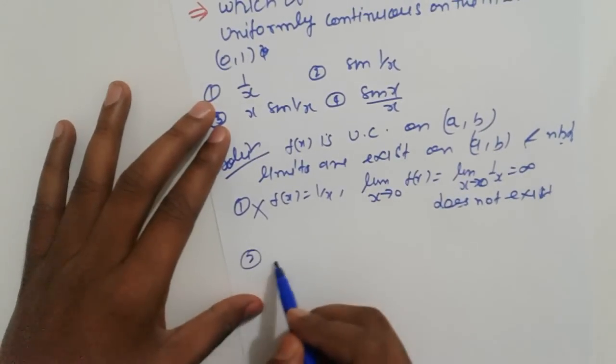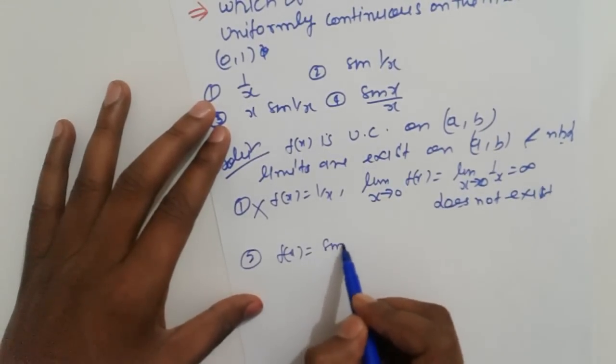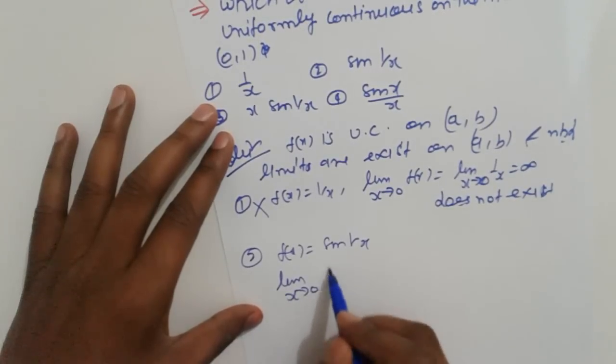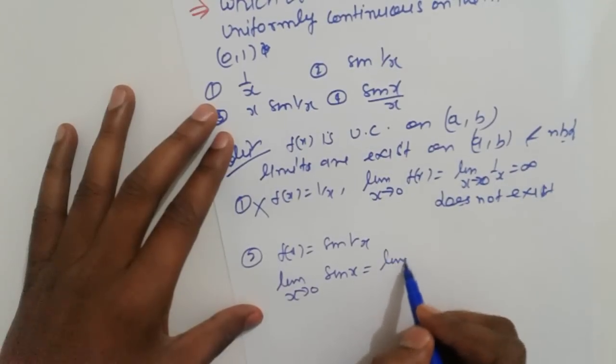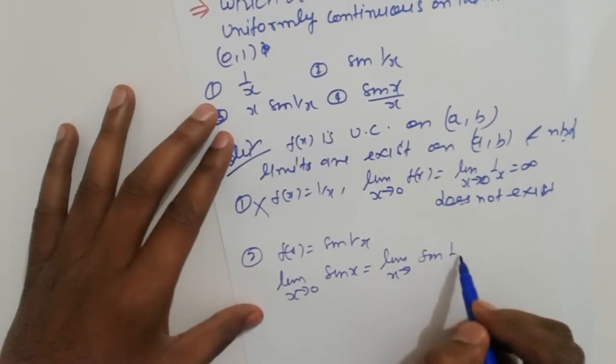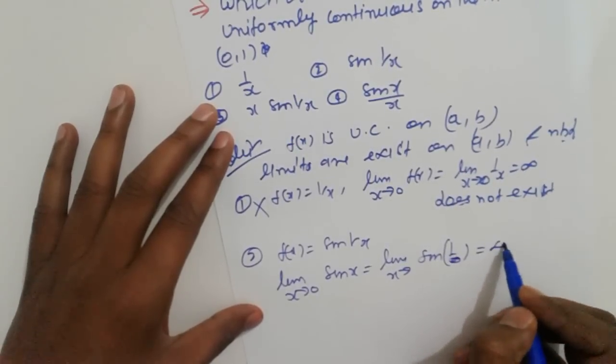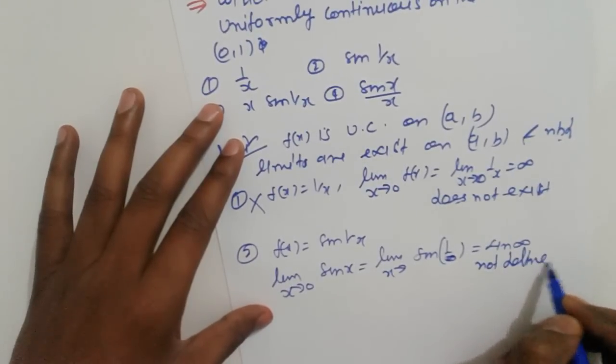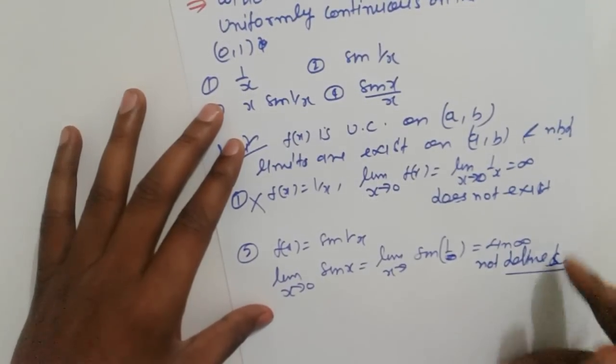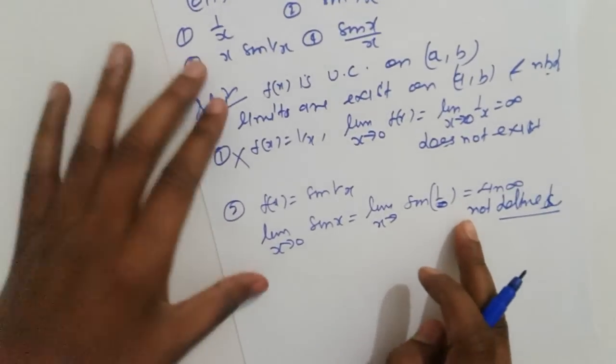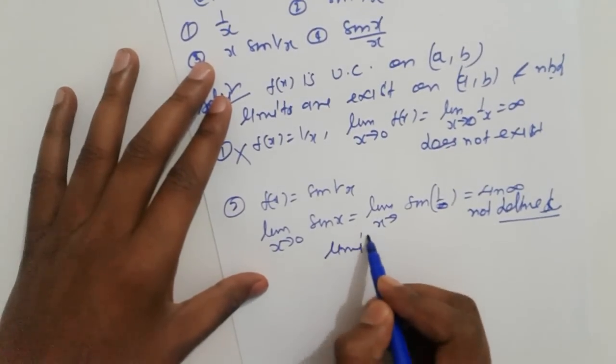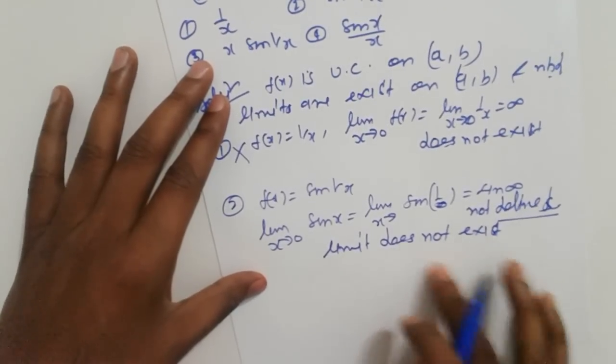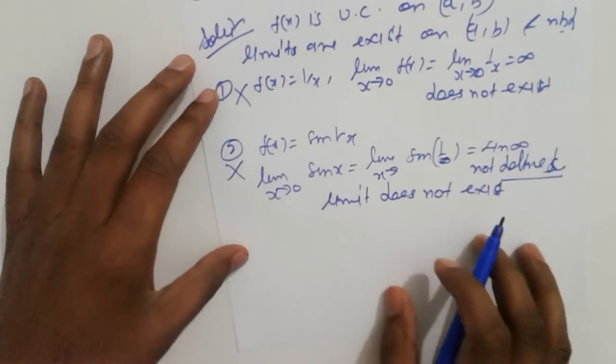Next, second option: f(x) = sin(1/x). So limit as x tends to 0 of sin(1/x), which equals limit as x tends to 0 of sin(1/0). It means sin(infinity), which is not defined. Not defined. It means the limit does not exist. So the limit does not exist, means the second option is also wrong. Next.